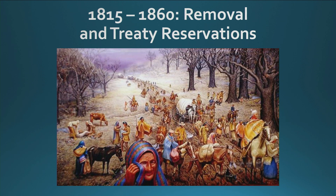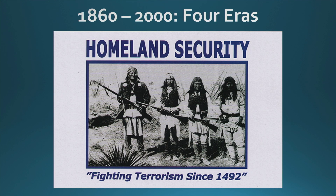Indian Territory eventually became Oklahoma. Then there is 1860 to 2000, which encompasses four eras. In the next segment, I will discuss those four eras since 1860.